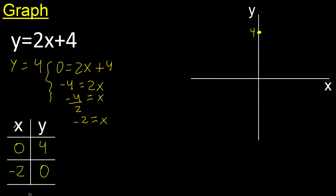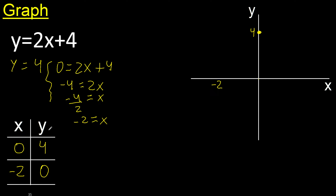x is minus 2. Negative, positive, negative. Minus 2 is here. y is 0. y 0 is here. 0, minus 2. Therefore the point is here.